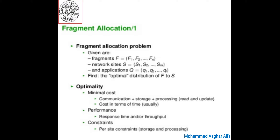The allocation problem involves finding the optimal distribution of fragments F to sites S. One of the most important issues is the definition of optimality. Optimality can be defined with respect to two measures.